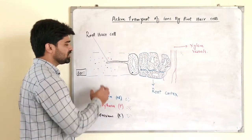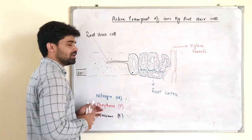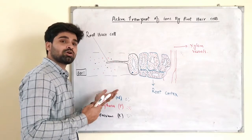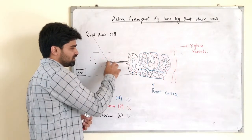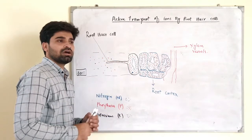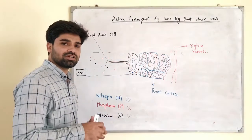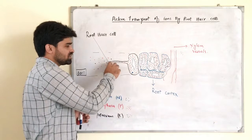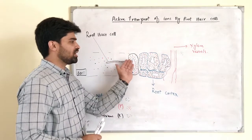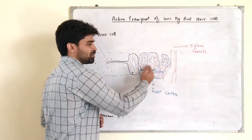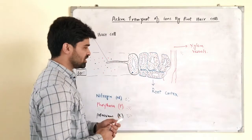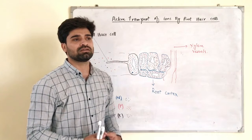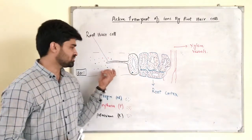In the soil, these minerals or ions are dissolved in water. As they come in contact with the surface cell membrane — as I mentioned earlier, there are different kinds of pumps in the cell membrane — these pumps actively pump the minerals inside the root hair cell. The minerals are then transported to other parts of the roots and ultimately into the xylem vessels, and transported to the rest of the plant.